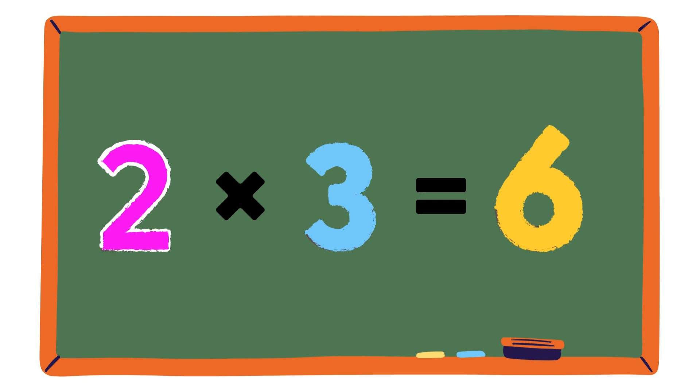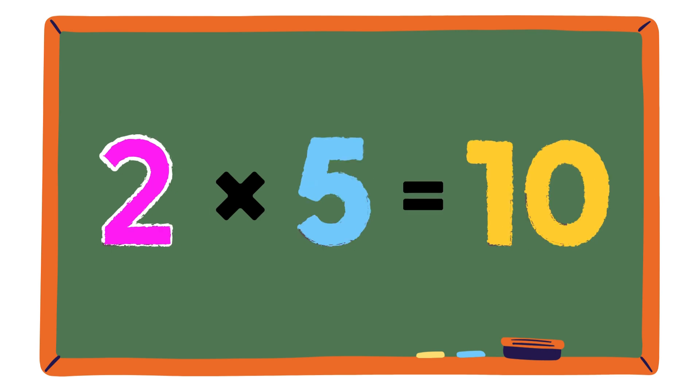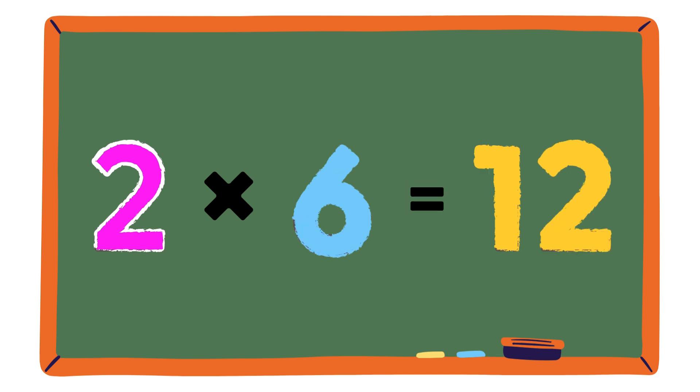That's right! 2 times 4 is 8, out of sight. 2 times 5 is 10, so neat. 2 times 6 is 12, feel the beat.